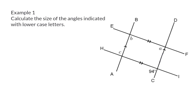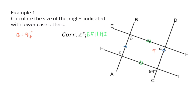Example 1: Calculate the size of the angles indicated with lowercase letters. In the sketch, you will see that we have two pairs of parallel lines: AB and CD, as well as EF and HI. Starting with angle A — by forming this angle, you will see that it and the known angle of 94 degrees form an F for corresponding angles. This means these two angles are equal. So angle A is 94 degrees, reason: corresponding angles, with the specific pair of parallel lines EF parallel to HI.